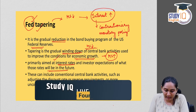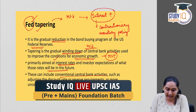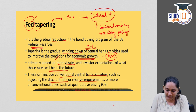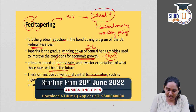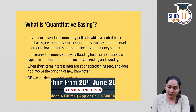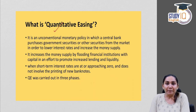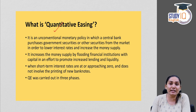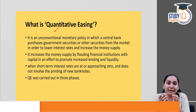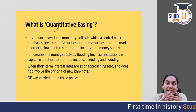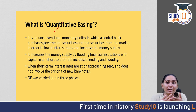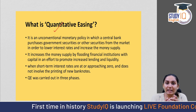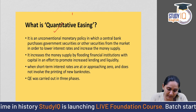Central bank activities can include conventional ones like adjusting the discount rate or reserve requirements, or unconventional ones like quantitative easing. Quantitative easing — from the term itself — is clearly related to easing restrictions or making something easier. So quantitative easing means easing the quantity of money supply in the economy, that is, increasing the money supply.